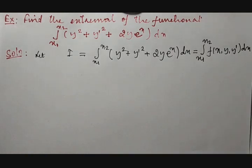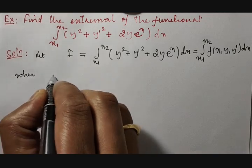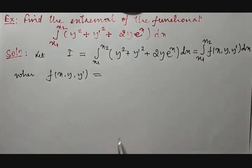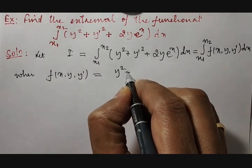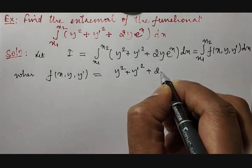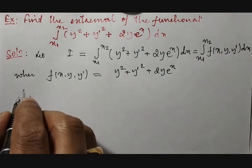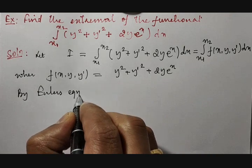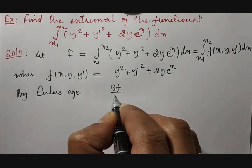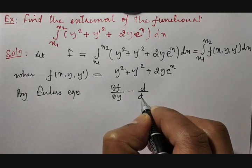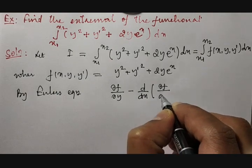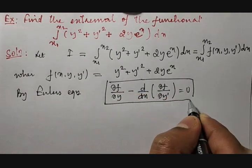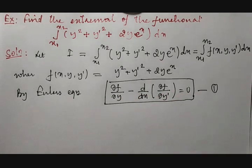Therefore, we can identify f of x, y, y-dash as equal to y squared plus y-dash squared plus two times y into e raised to x. Then we apply Euler's equation. Euler's equation states: ∂f/∂y minus d/dx of ∂f/∂y-dash equals zero. This is Euler's equation — we will call it equation number one.